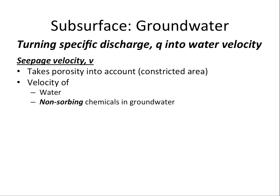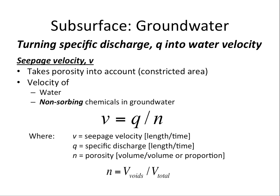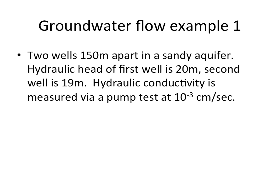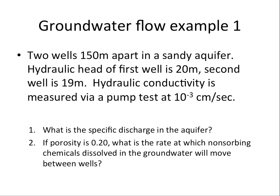To turn specific discharge into water velocity, we need to take into account the porosity of a soil — that constricted area. The velocity of water is represented by seepage velocity, and non-sorbing chemicals in groundwater can also be represented by seepage velocity, so it's a maximum velocity. Seepage velocity V is calculated by taking the specific discharge and dividing by porosity, where porosity is the total volume of voids divided by the total volume of soil plus voids.